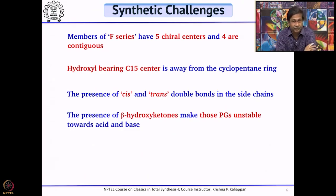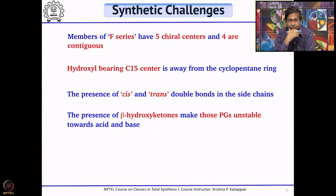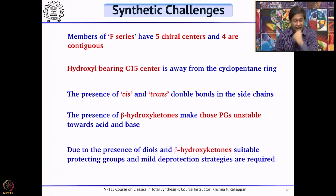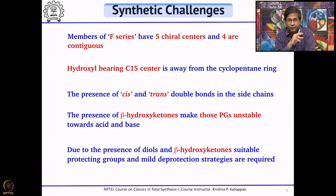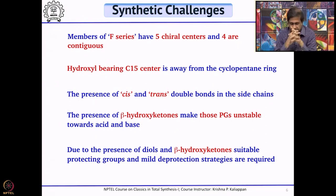Prostaglandins D and E have a beta-hydroxy ketone — that is an aldol. Once you have this aldol, as you know, they are slightly unstable when treated with acid or base, so one should be extremely careful at that stage not to use acid or base. Because you have a beta-hydroxy ketone, diol, and triols, the synthetic strategies should have proper protecting groups, and also orthogonal protecting groups — two different protecting groups introduced and cleaved at different times. These are the synthetic challenges in the total synthesis of prostaglandins.